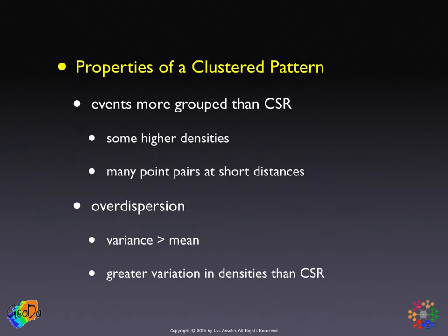If they're more grouped, that means in some part of the space there will be higher densities, and in other parts there will be lower densities. Because of this grouping—and this is thinking ahead to the statistics we will develop later—many point pairs will be at shorter distances.